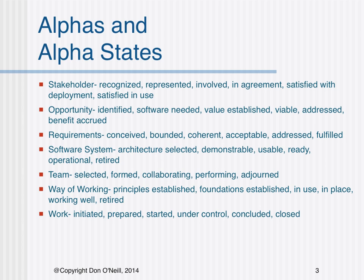More specifically, the alphas and their sequential states include: Number one, stakeholder — recognized, represented, involved, in agreement, satisfied with deployment, satisfied in use. Number two, opportunity — identified, software needed, value established, viable, addressed, benefit accrued.